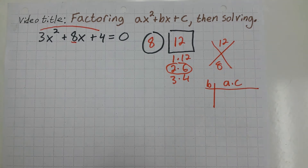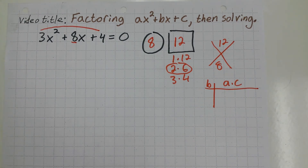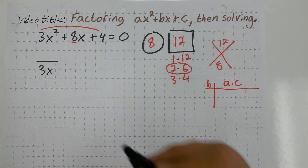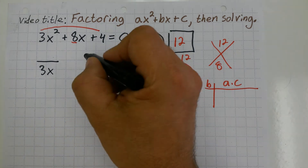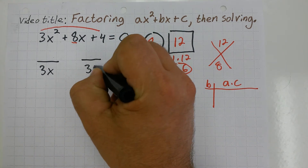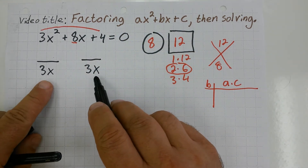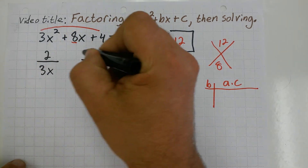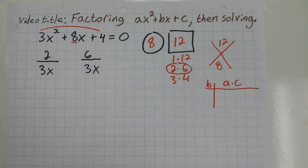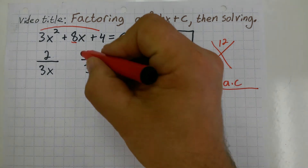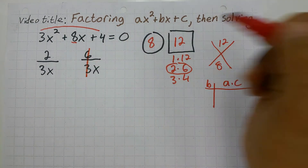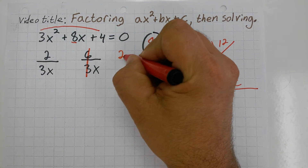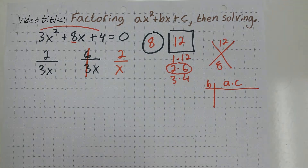Once we have that 2 and 6, let's do it quickly. What we can do now is throw a division bar under the leading coefficient 3x, and another division bar under the leading coefficient 3x. Then we dump the 2 and the 6 on top of those. Now we look to see if anything simplifies — and lo and behold, the 6 and the 3 do simplify. 6 over 3 simplifies to just 2 over x.